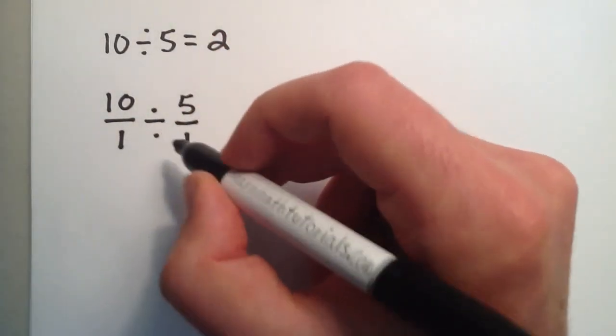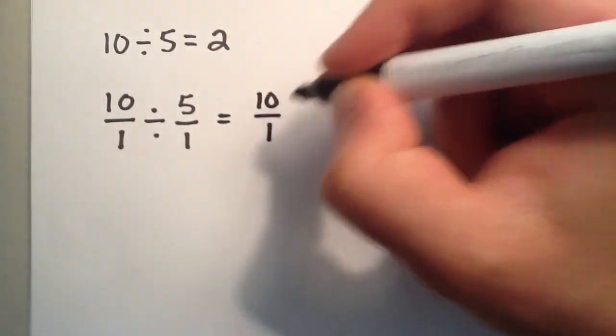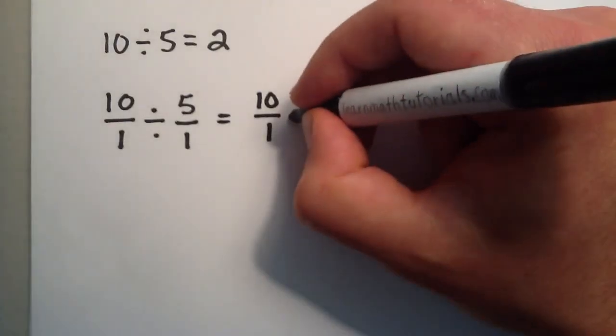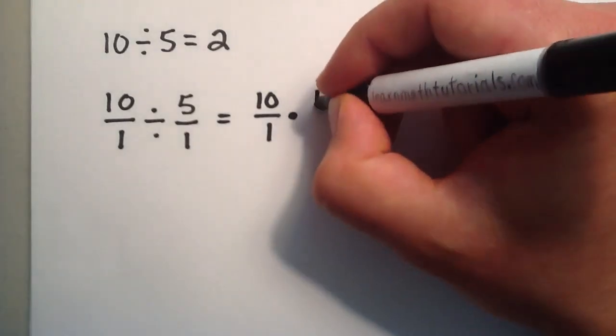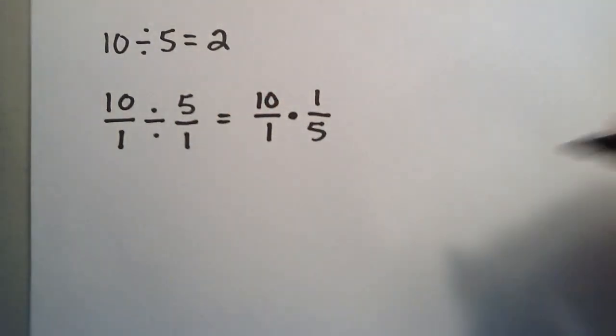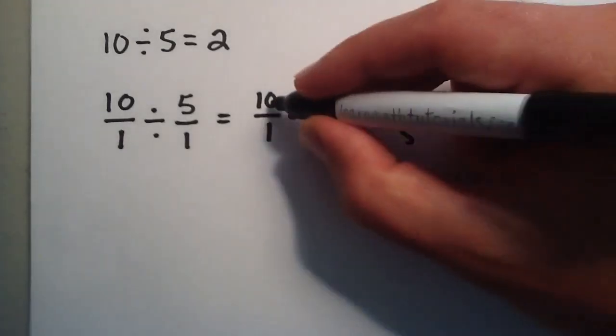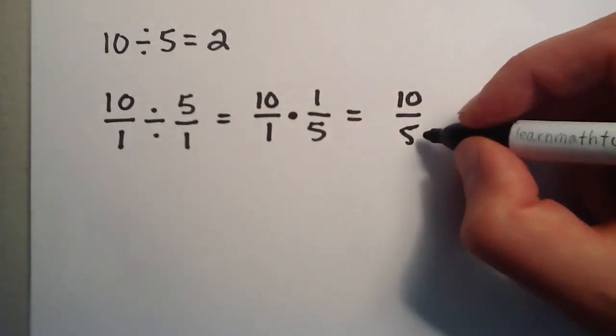Now let's apply the rule that I just mentioned to you. So we rewrite the first term, 10 over 1, and we multiply that by 1 over 5, flipping the numerator and the denominator. Now this just becomes 10 over 5. 10 times 1 is 10, 1 times 5 is 5.